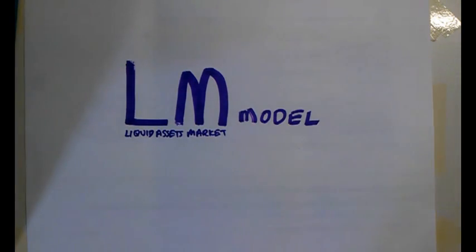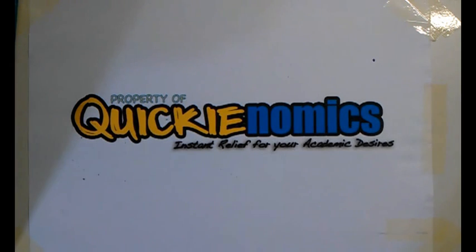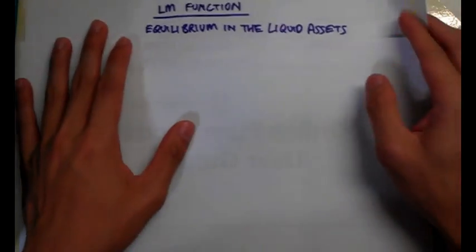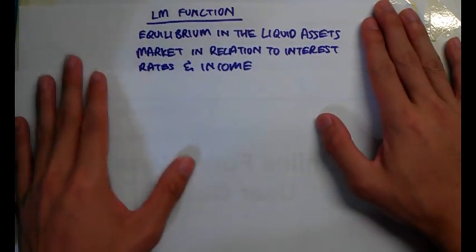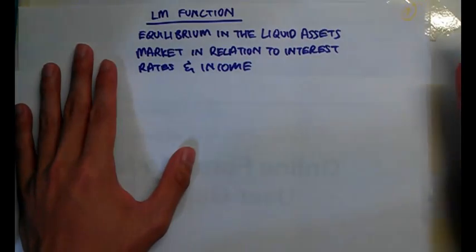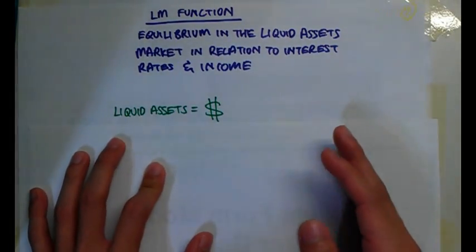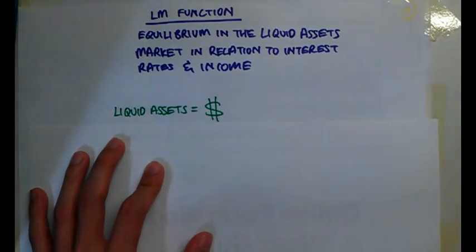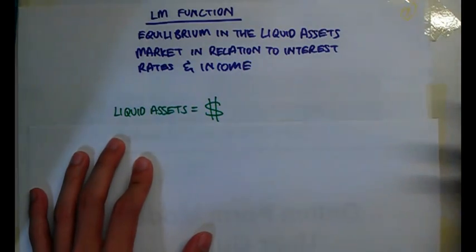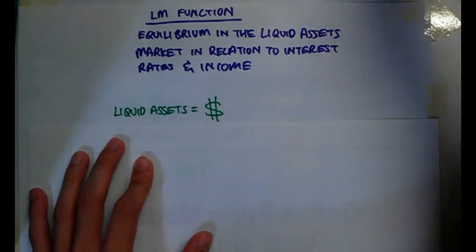The LLM model, or the liquid assets market model, is actually quite a simple model to understand. So let's start with the definitions like we always do. What is the LLM function? The LLM function is equilibrium in the liquid assets market in relation to interest rates and income. When we talk about liquid assets, it actually means money — it's just a fancy term for money. We call it liquid assets because it can be easily used for transactions.